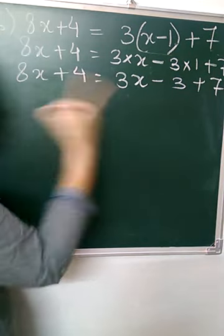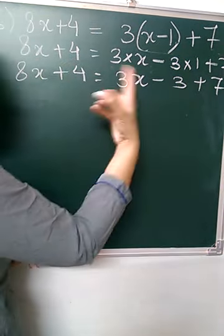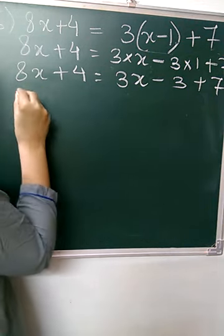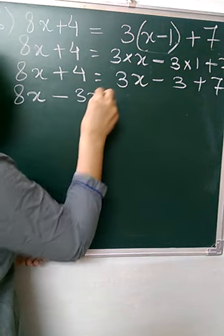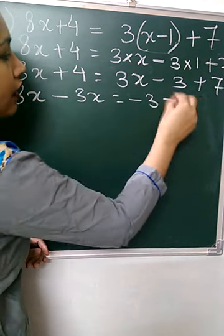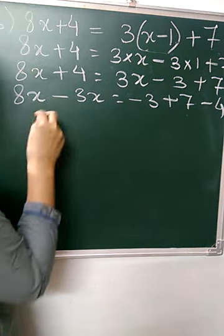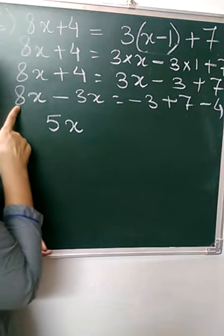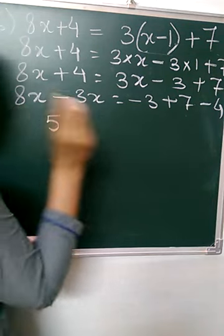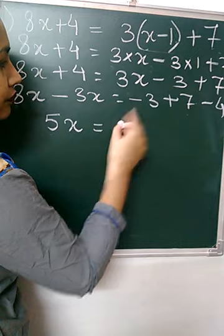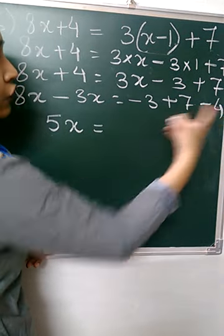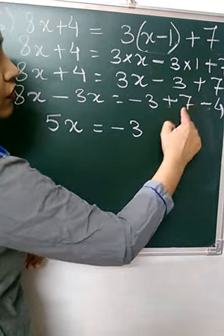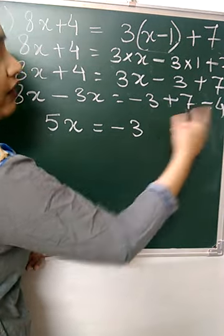Now we are going to transpose the variable to this side and the constant to that side. So this is plus, it becomes minus, and this is also plus, it becomes minus. So 8x minus 3x, and here minus 3 plus 7 minus 4. 8 minus 3 will give you 5. So 5x. Now minus 3 plus 7 minus 4: plus minus is minus, so 7 minus 4 is 3.